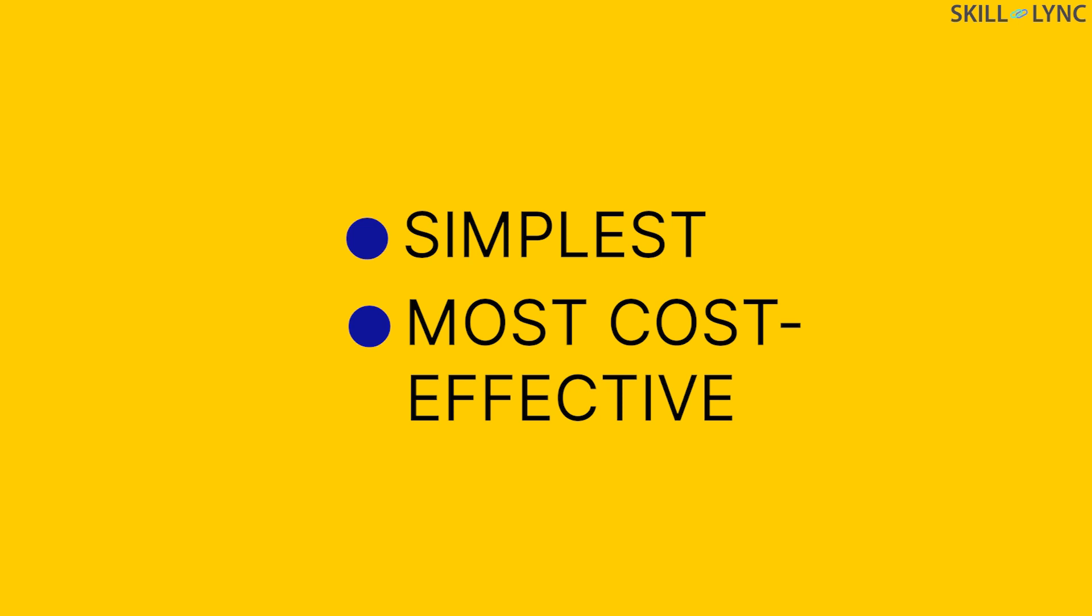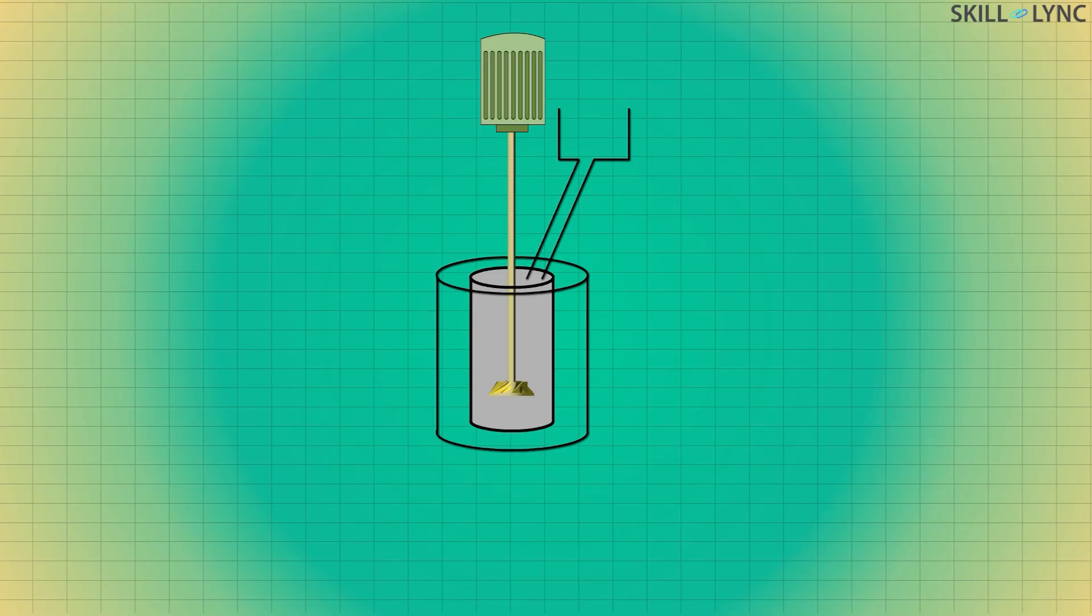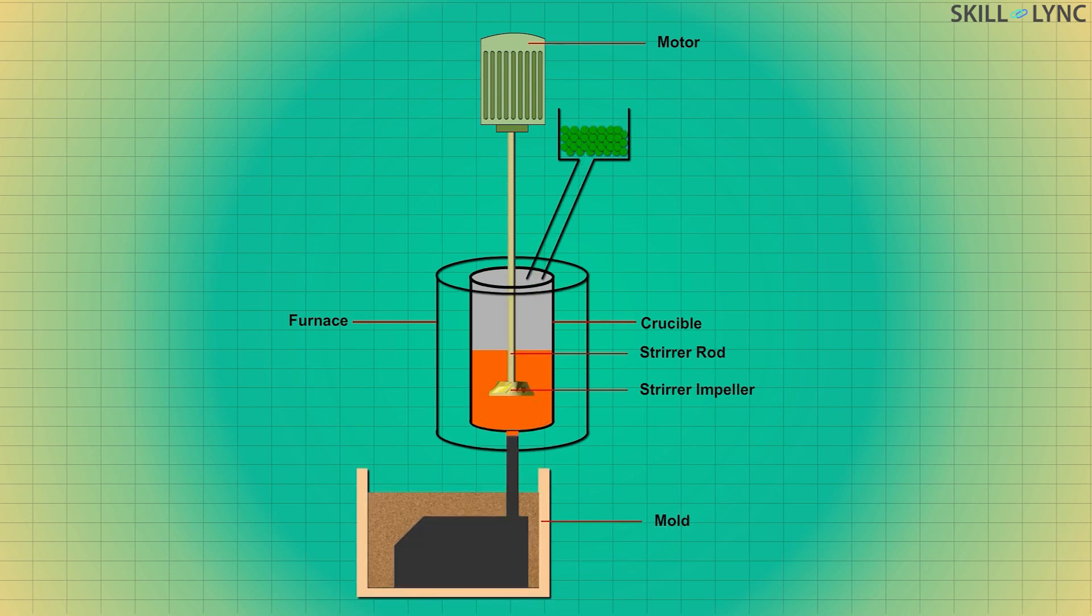Now let's talk about the stir casting setup. The stir casting setup consists of a furnace, reinforcements, feeder, and a stirrer. The purpose of the stirrer is to form a vortex in which the reinforcing materials and molten metal are mixed. It consists of a stirring rod and an impeller blade. The rod is connected with a motor which is used to operate the mechanical stirrer.